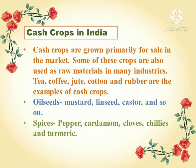Let us now talk about cash crops. They are grown primarily for sale in the market, unlike food crops. Some examples of cash crops are tea, coffee, jute, cotton, and rubber. Some of them are also used as raw materials in many industries. For example, cotton is used as a raw material for making cotton clothes, rubber is used for making parts of automobiles, and jute is used for making jute bags.